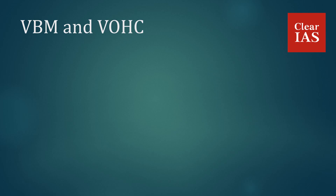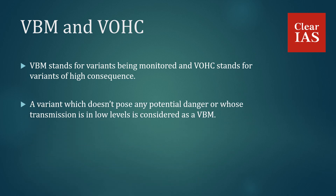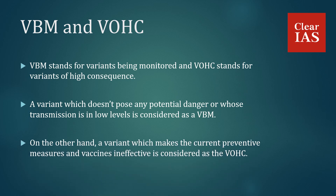VBM and VOHC. VBM stands for Variants Being Monitored and VOHC stands for Variants of High Consequence. A variant which does not pose any potential danger or whose transmission is at low levels is considered as VBM. So over time, the classification can change — previously variants considered as Variants of Concern, like Alpha, Beta and Gamma, have now been classified as variants being monitored. On the other hand, a variant which makes current preventive measures and vaccines ineffective is considered as VOHC. However, as of now, there are no variants of high consequence.